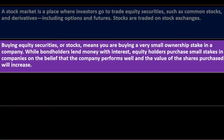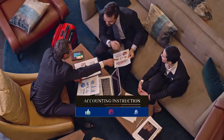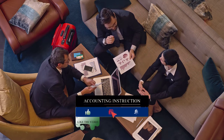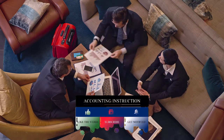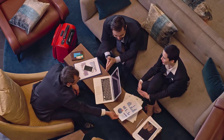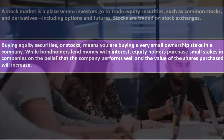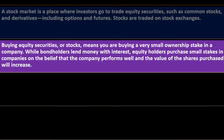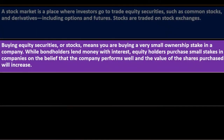Buying equity securities or stocks means you are buying a very small ownership stake in a company. This is similar to voting rights in a democratic republic — you don't vote on every decision but rather vote for representatives who make decisions on your behalf. Similarly with stocks, you have voting capacity to vote for things like the board of directors. The board of directors represents shareholders by hiring management capable of making decisions to generate revenue for stockholders.